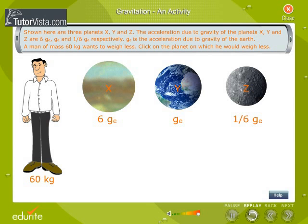Shown here are three planets X, Y, and Z. The acceleration due to gravity of the planets X, Y, and Z are 6 GE, GE, and 1/6 GE respectively. GE is the acceleration due to gravity of the Earth. A man of mass 60 kg wants to weigh less. Click on the planet on which he would weigh less.